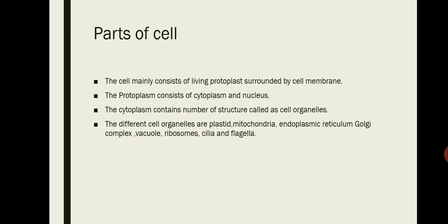Parts of cell: the cell mainly consists of living protoplasm surrounded by cell membrane. The protoplasm consists of cytoplasm and nucleus. The cytoplasm contains a number of structures called cell organelles. The different cell organelles may be plastids, mitochondria, endoplasmic reticulum, Golgi complex, vacuoles, ribosomes, cilia, flagella, etc. And all of these we will study in our next video.